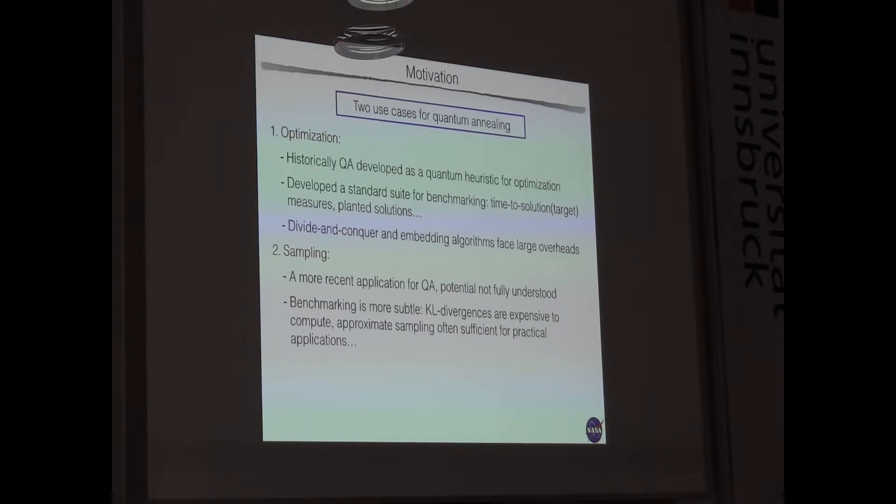We can also try to do sampling, and David talked about this quite a bit this morning. And this is a more recent application for quantum annealing. And I would say that its potential is really not fully understood, at least we don't have clear dooming scenarios for it. But it's also harder to work with sampling. The benchmarking is even more subtle. If you want to compute KL divergence, it's difficult to compute. And for example, we know often for practical application, we approximate the sampling, but how approximate we should be, all these questions are not so well understood.